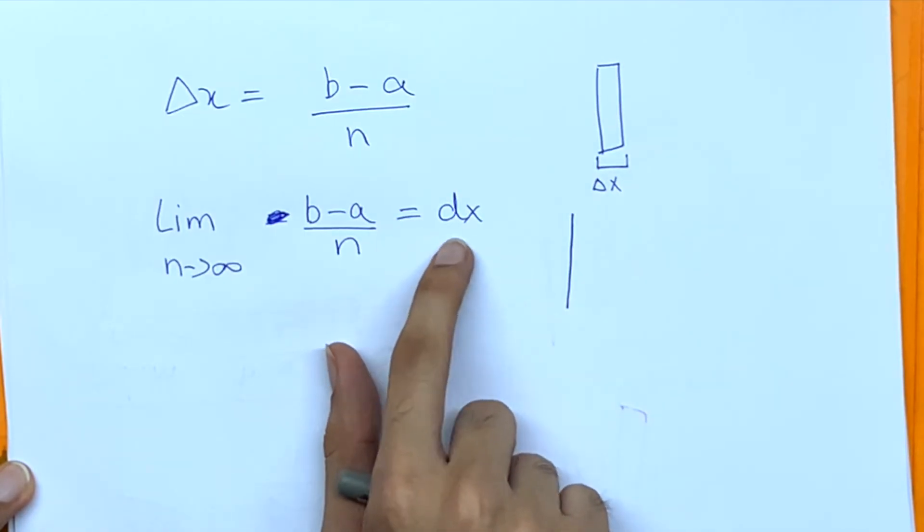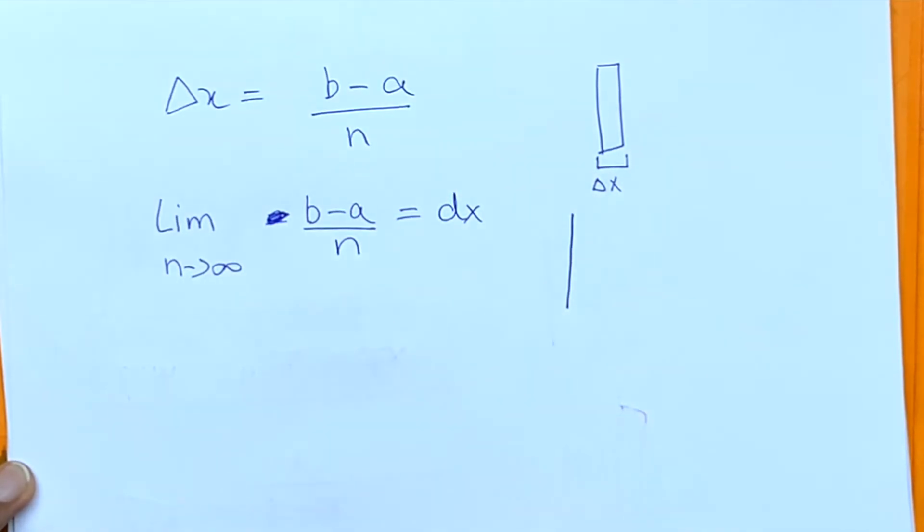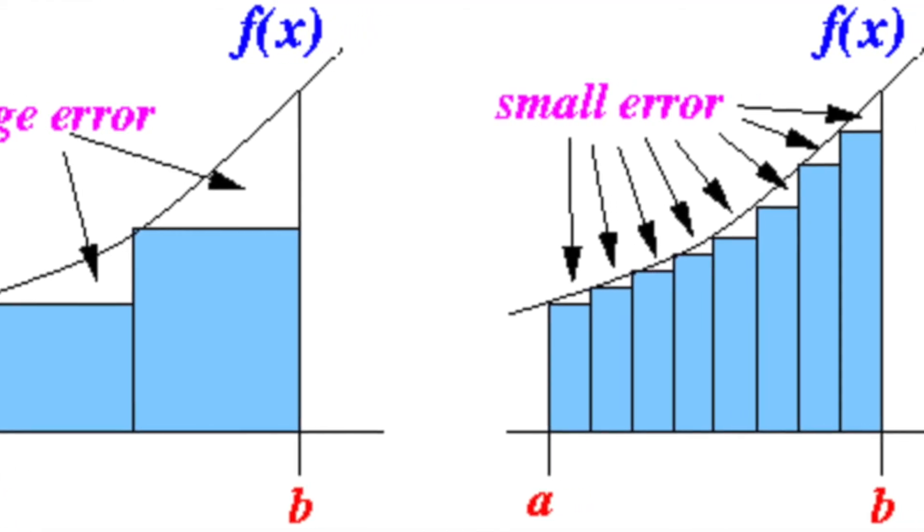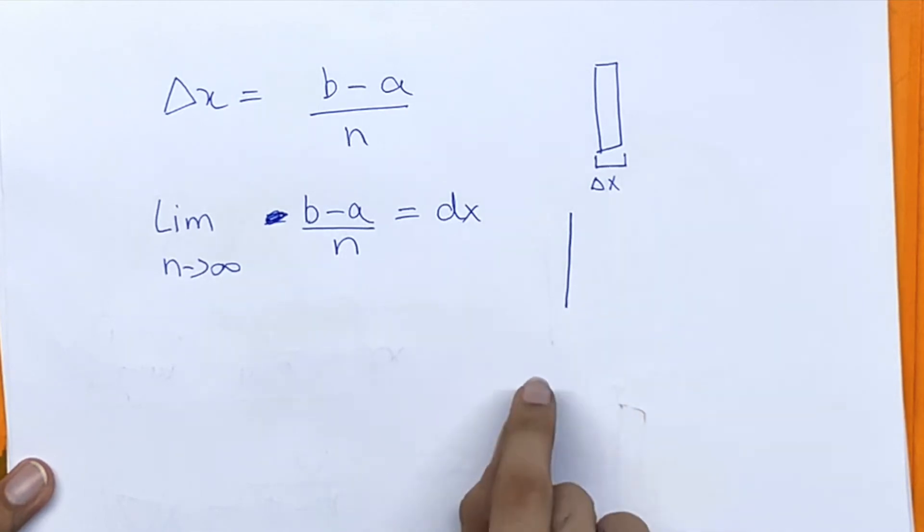Because the base of the rectangle is so small, there will almost be no room for error and it will be exactly like summing up the height at each point with extremely negligible difference between the two points.